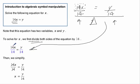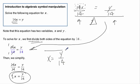If we divide, then these cross cancel, and we're left with just a plain x, or 1x, which is the same thing, equals y over 14. So x equals y over 14 would be our final answer for this.